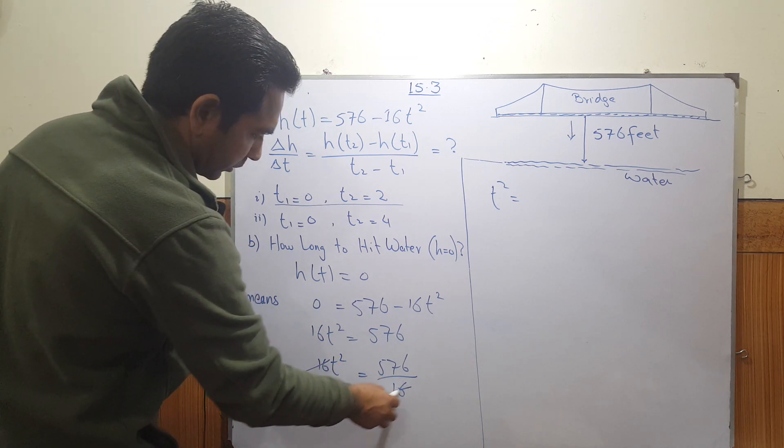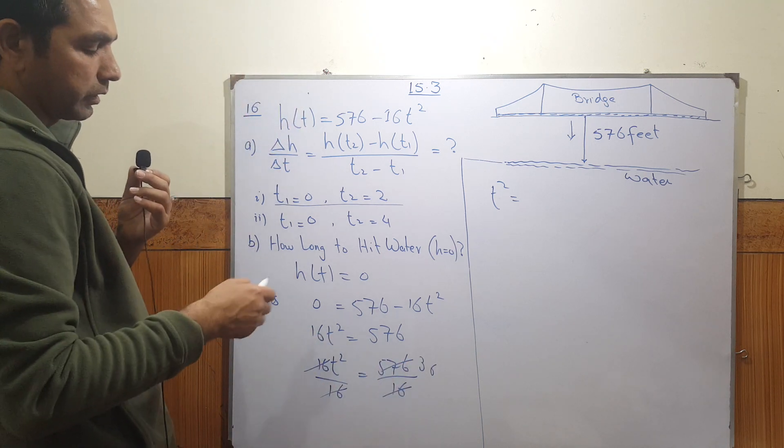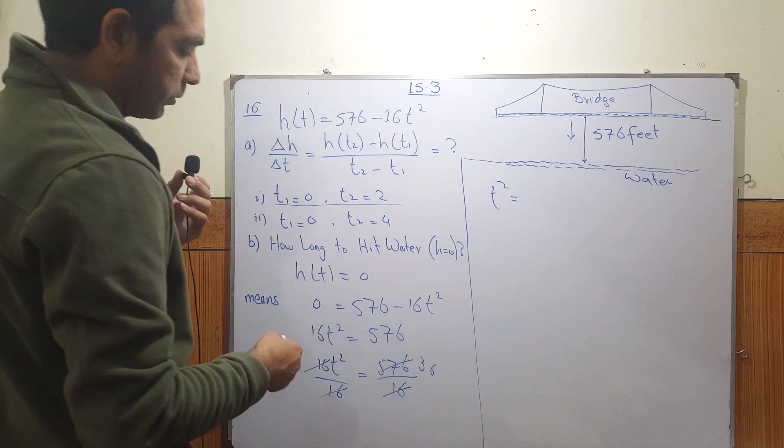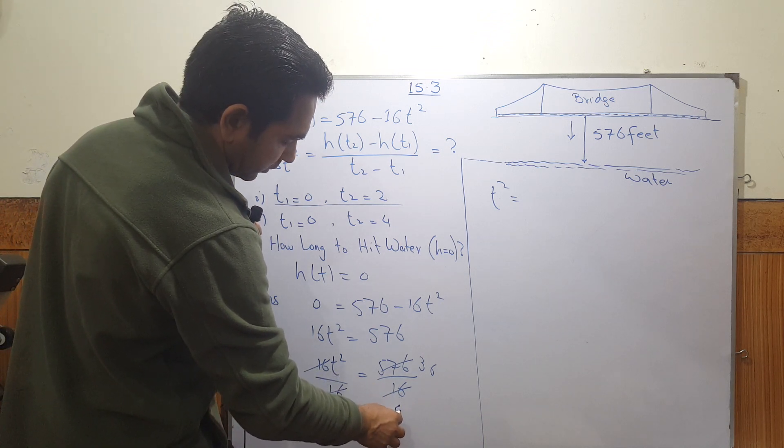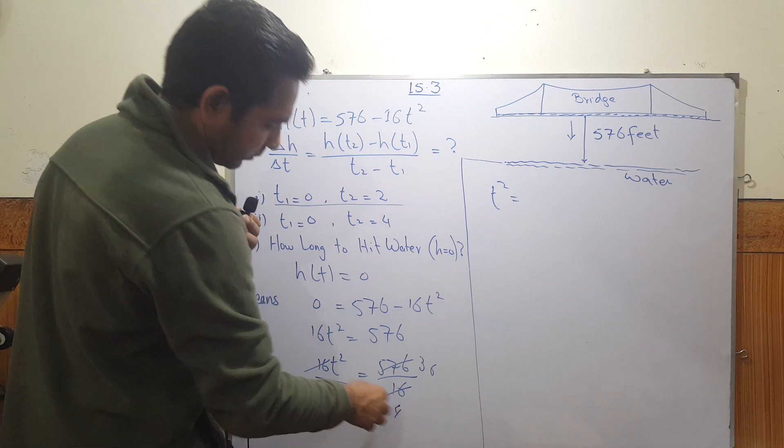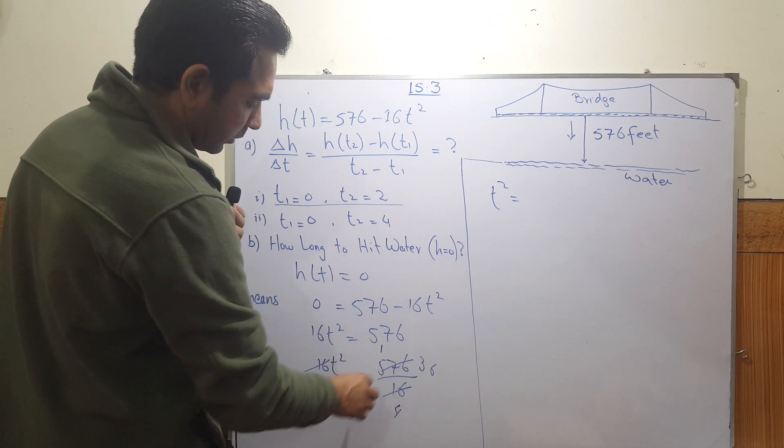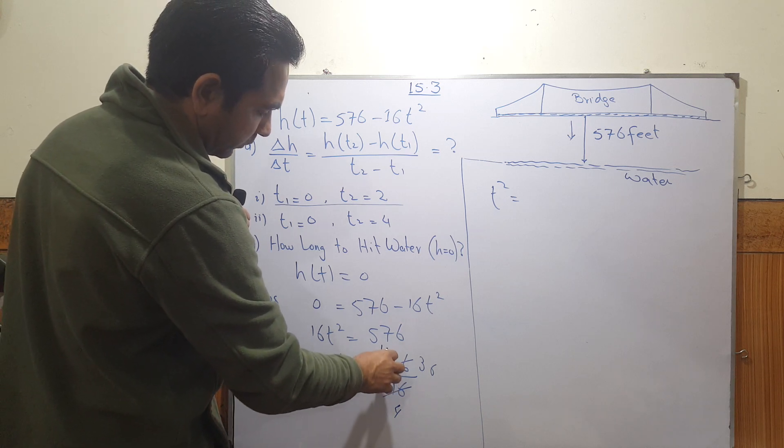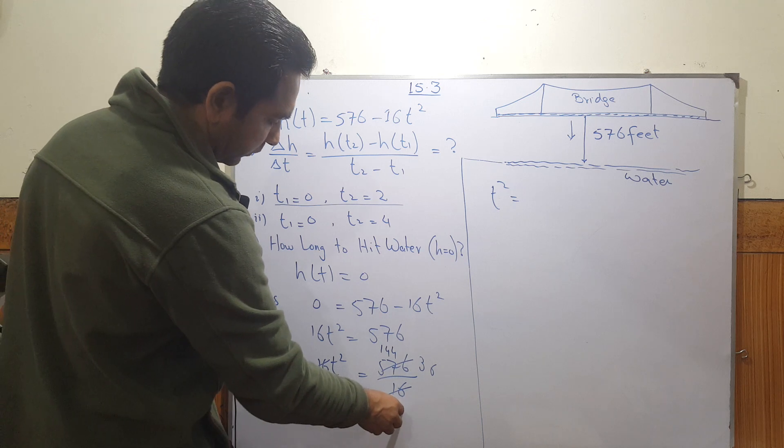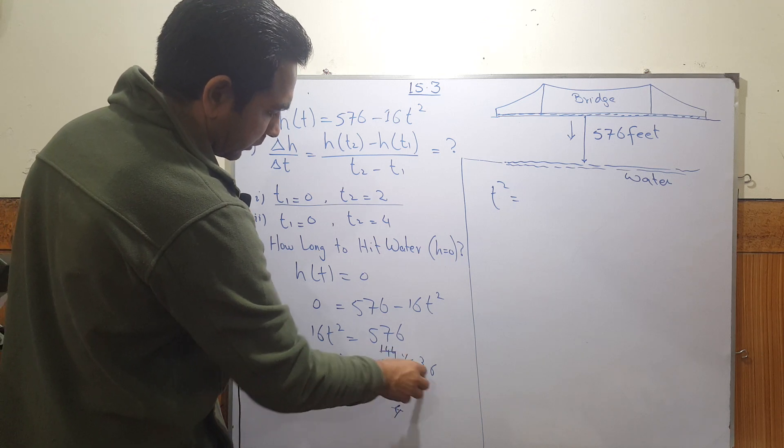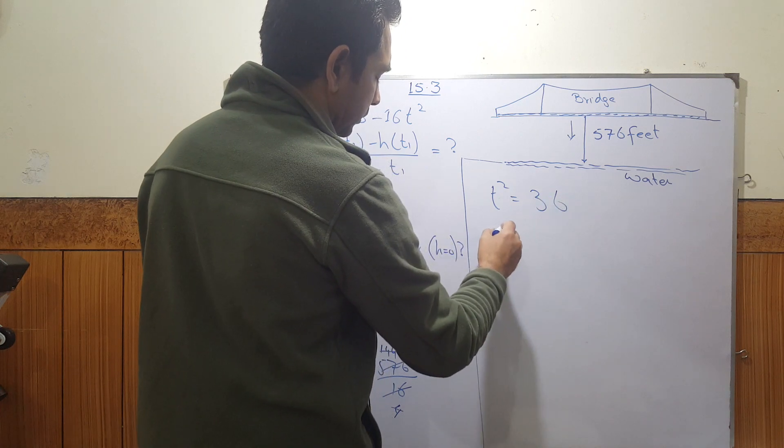So this would give us 16 into 36, or you can calculate by dividing the numbers. So 576 by four would give us 144, and 144 by four would give us 36. So that is 36, and taking the square root...